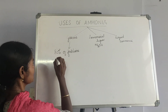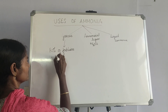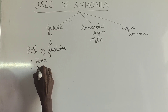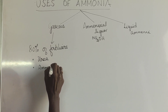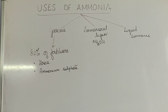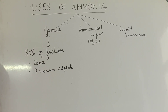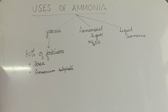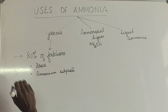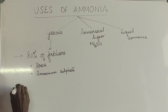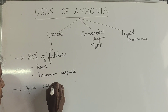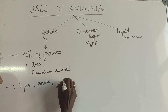For example, there are fertilizers like urea, which is widely used, and ammonium sulfate, which is more preferred than ammonium nitrate because ammonium nitrate is explosive and very difficult to store. We prefer ammonium sulfate and urea. Ammonia is also used to make dyes, resins, and polymers.